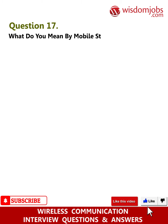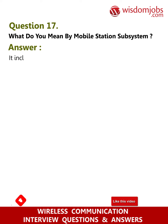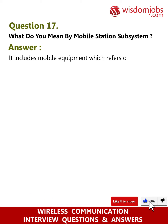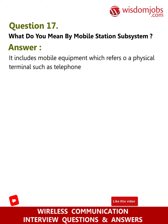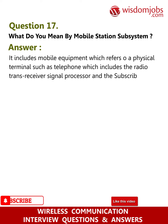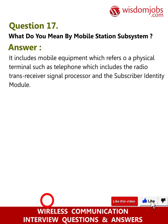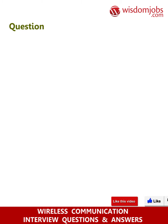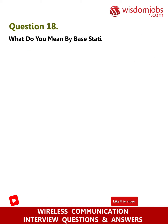Question 17: What do you mean by mobile station subsystem? Answer: It includes mobile equipment, which refers to physical terminals such as a telephone, which includes the radio transceiver, signal processor, and the subscriber identity module.